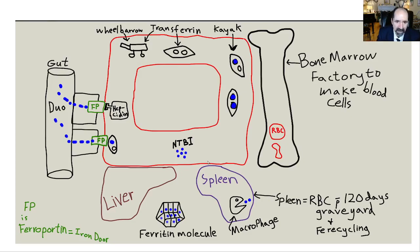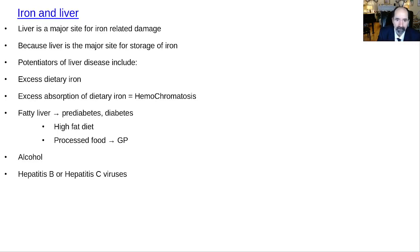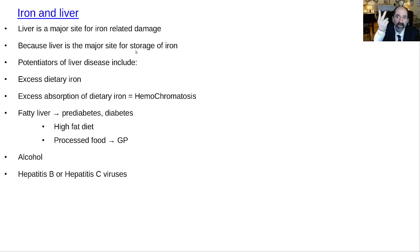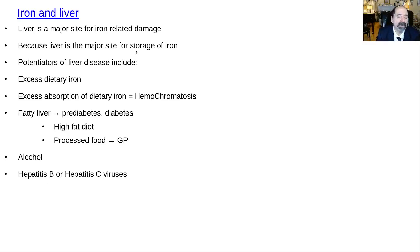The liver is a major storage site for iron within ferritin, so it's one of the earlier and more severely damaged sites with iron accumulation. The liver faces synergistic toxins: high fat diet causing fatty liver, alcohol as a direct liver toxin, iron toxicity, and glyphosate from non-organic food. More people are now ending up in liver failure from fatty liver progressing to liver fibrosis, cirrhosis, full-blown liver failure requiring transplant, or liver cancer.